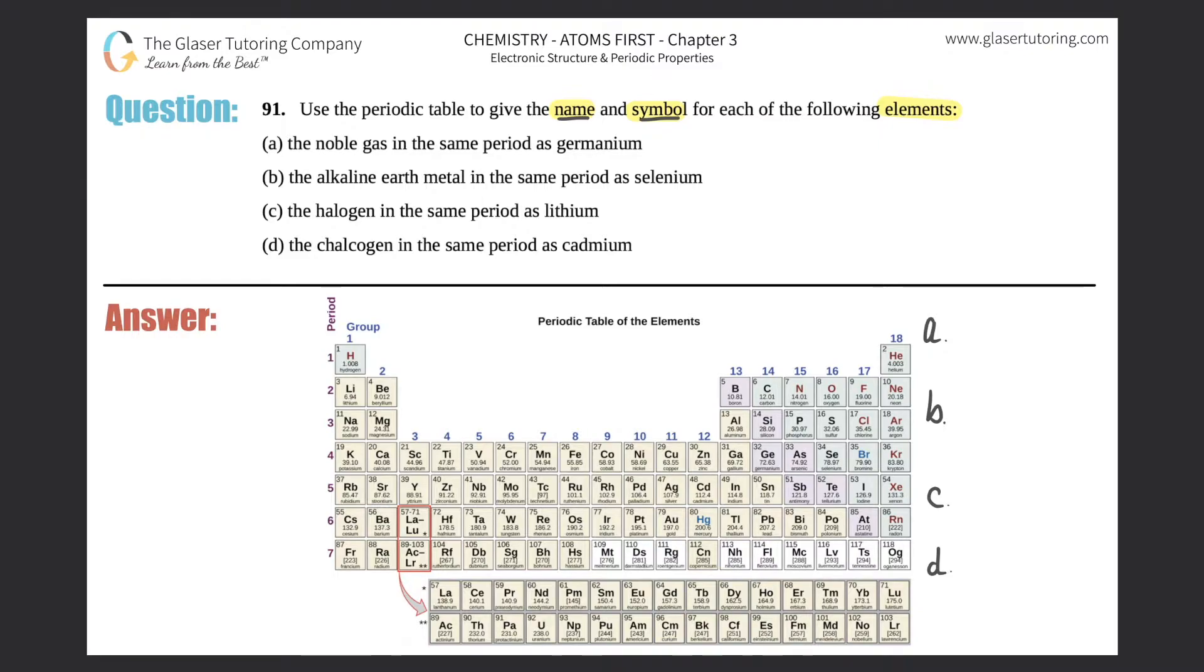Now for part a, they say what's the noble gas in the same period as germanium. A couple things here: we need to know where our noble gases are and we need to know what a period is on the periodic table. Remember that periods always run from left to right. Groups, however, go up and down.